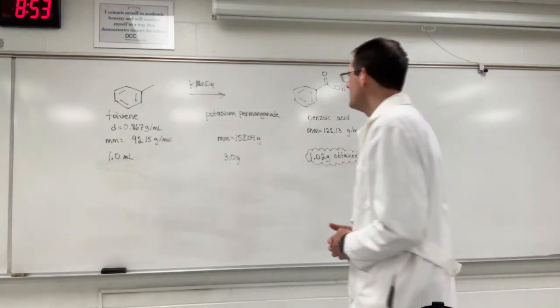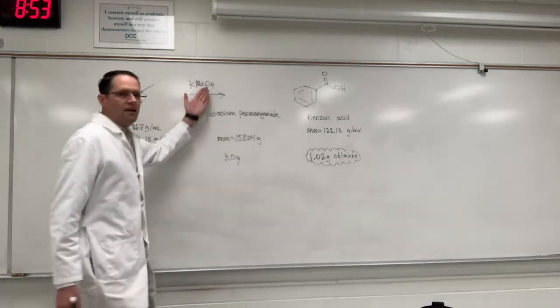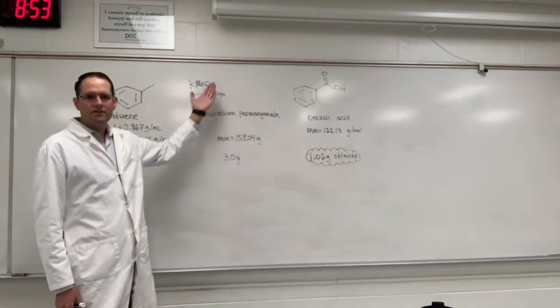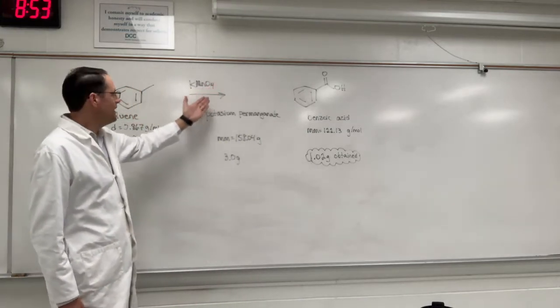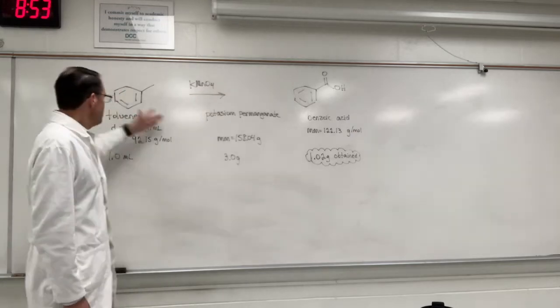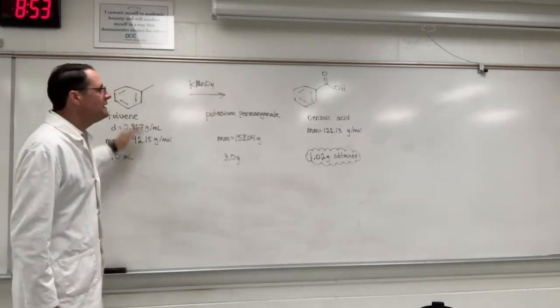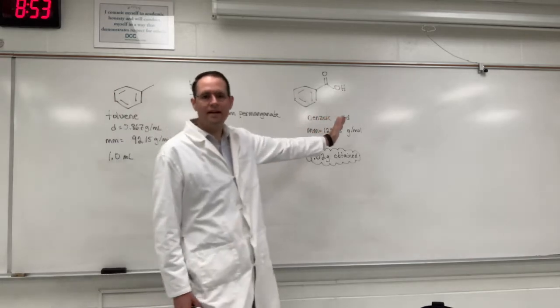When you read a procedure it will often say one of the reagents is used in large excess. That's the potassium permanganate. That's not our limiting reactant. The limiting reactant is toluene. We're synthesizing benzoic acid.